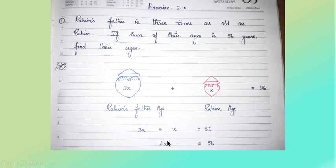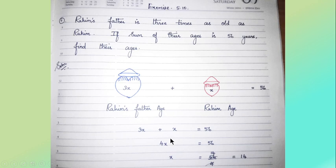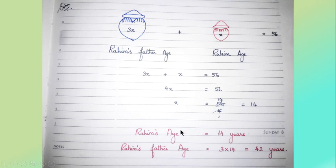Since 3x and x are like terms, we add them to get 4x equals 56. This is a linear equation in one variable. When 4 goes to the right-hand side it becomes division: 56 divided by 4 equals 14, so x equals 14. Therefore Rahim's age is 14 years and his father's age is 3 × 14 = 42 years. Adding both gives 56, which confirms our answer.